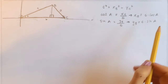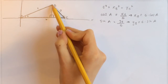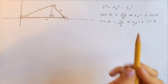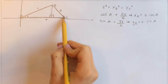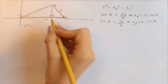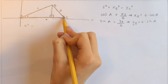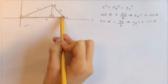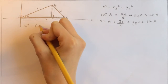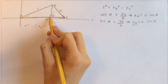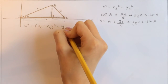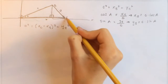Now let's start looking at the second triangle. We can also use the Pythagorean theorem, and we know that a squared equals this side squared plus this side squared. That gives us a squared equals the quantity x of C minus x of B, all squared, plus y of B squared.